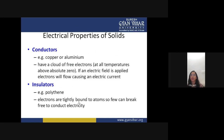Conductors carry current. Examples include copper and aluminium. They have a cloud of free electrons in their outer layer at all temperatures above absolute zero. If an electric field is applied, electrons will flow causing an electric current. In conductors, you simply apply an electric field and you get current.